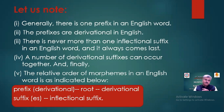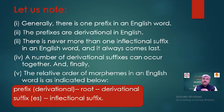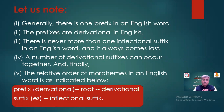Let us note these important points. In English, the prefixes are derivational. In English, there is never more than one inflectional suffix in an English word, and it always comes last. A number of derivational suffixes can occur together. Finally, the relative order of morphemes is: derivational prefix, then root, then derivational suffix or suffixes, and then inflectional suffix.